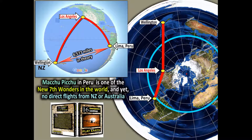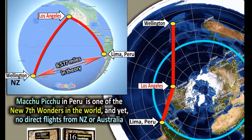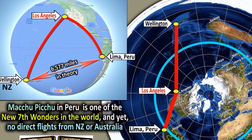Another example: a flight from Wellington to Lima. Same thing — you have to fly to Los Angeles and then to Lima. You can never really fly straight unless it's a special aircraft with extended range. Otherwise, you have to cross the equator two times because we live on a plane, not on a ball.